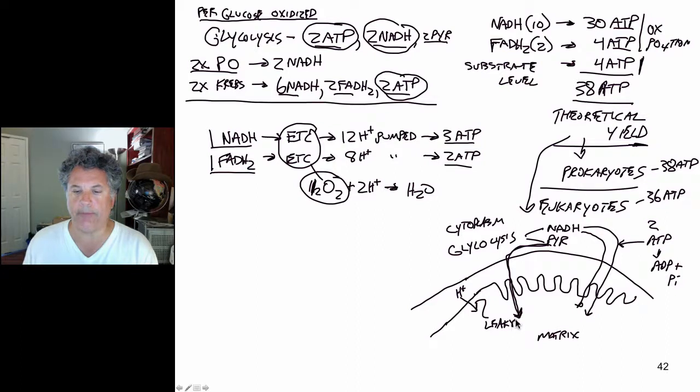You have a leaky membrane. So not all the hydrogen ions are able to flow through the ATP synthase and yield ATP. Also, we need to get pyruvate in here.